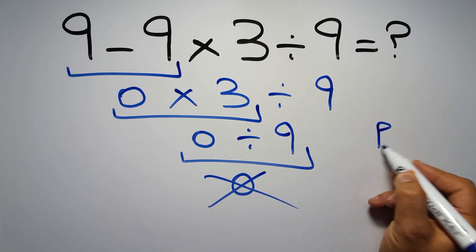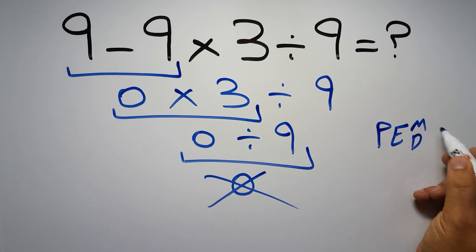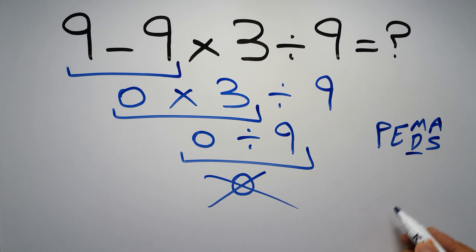We have to do parentheses, then exponents, then multiplication or division, and finally addition or subtraction. Remember that multiplication and division have equal priority and we have to go from left to right. The same applies to addition and subtraction.